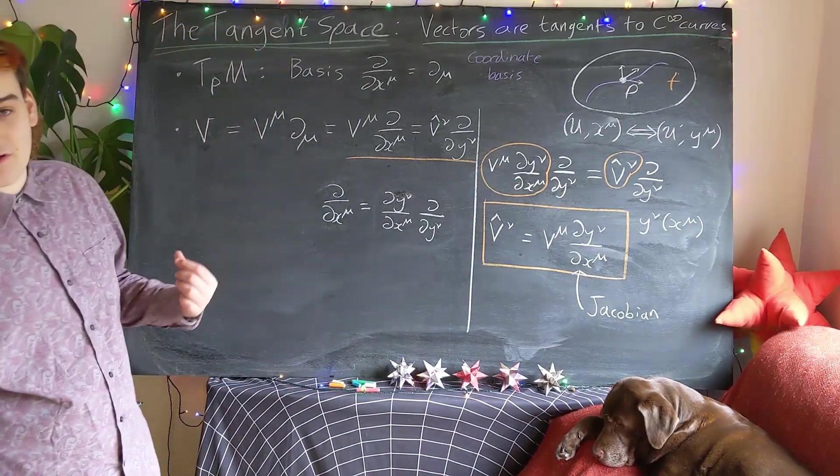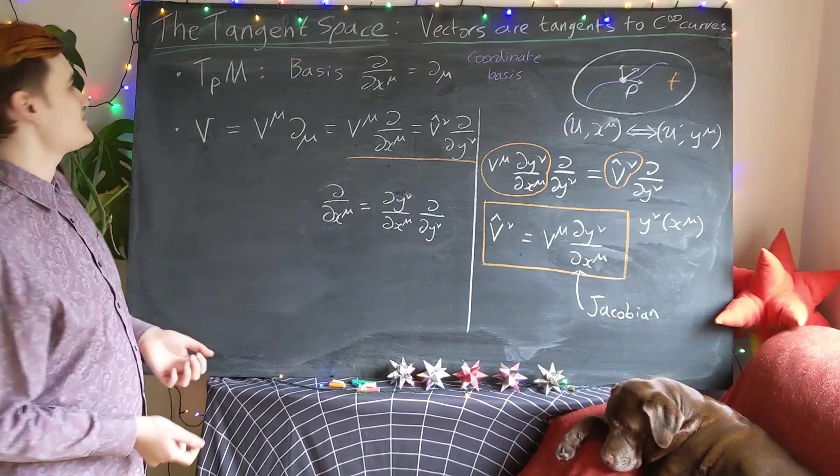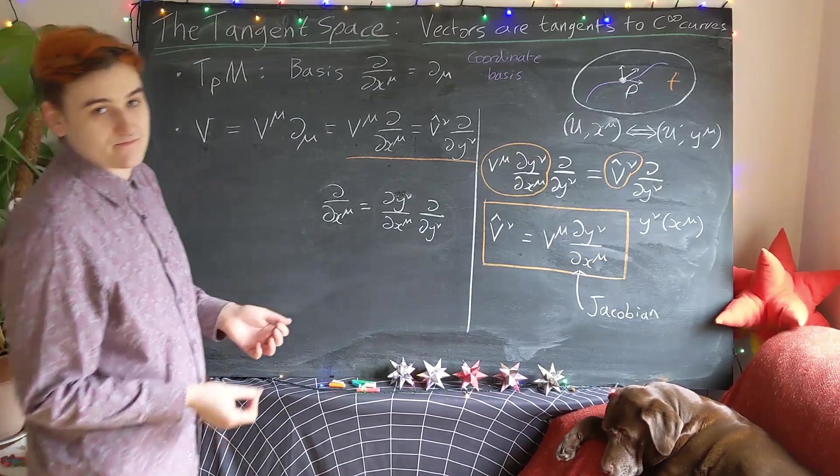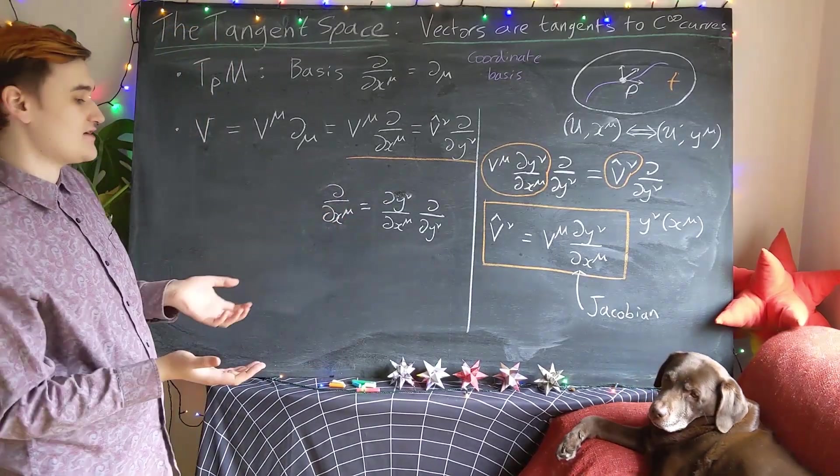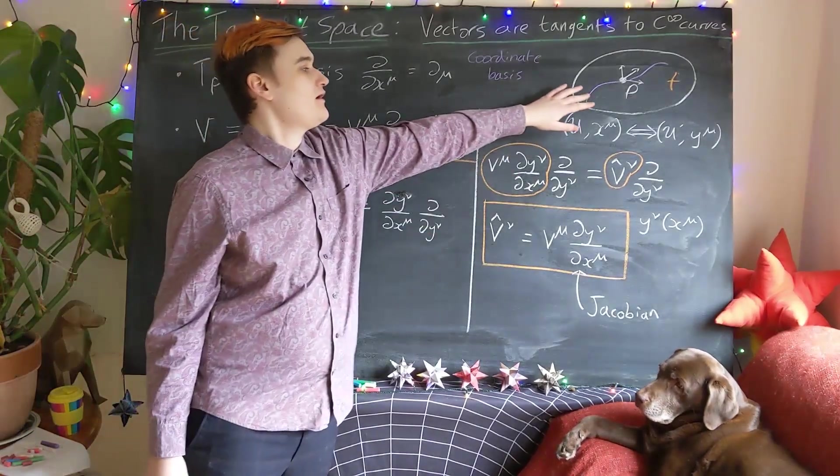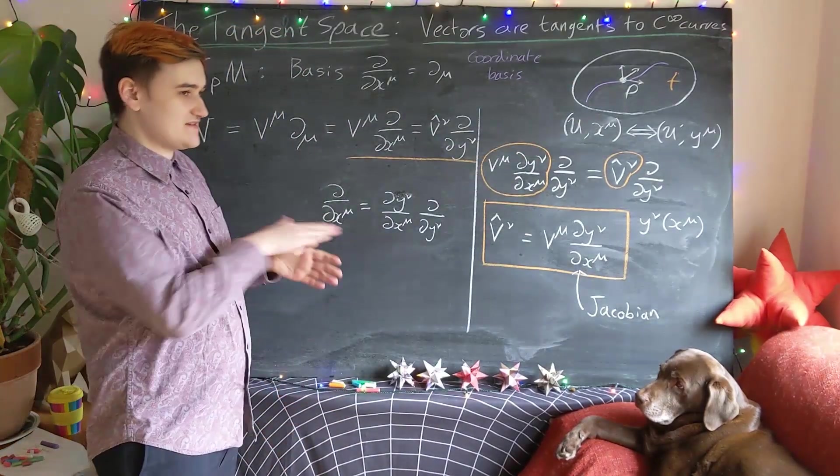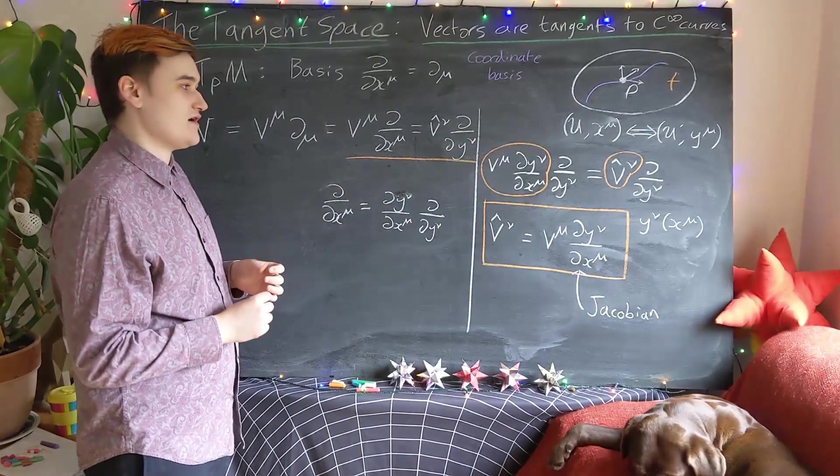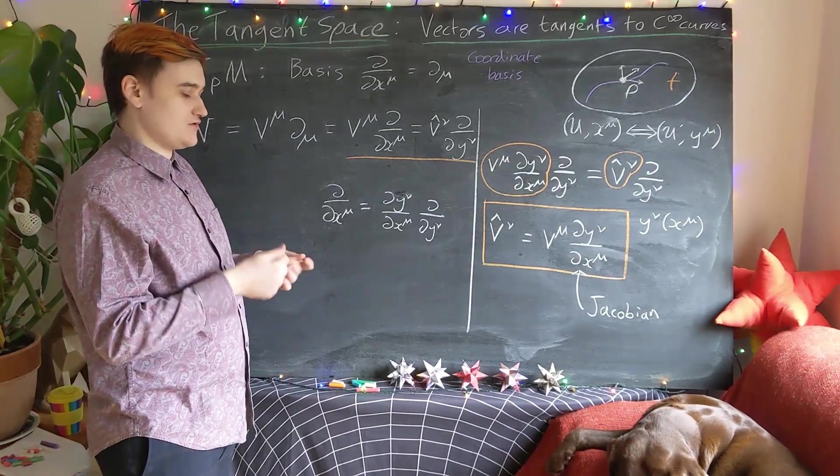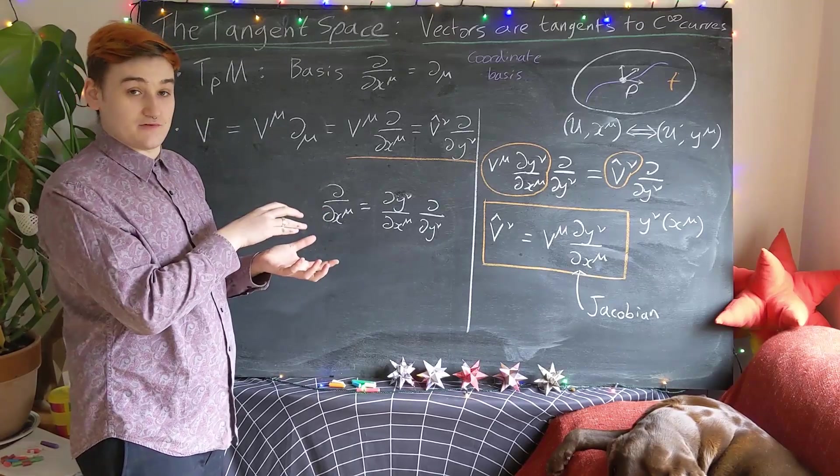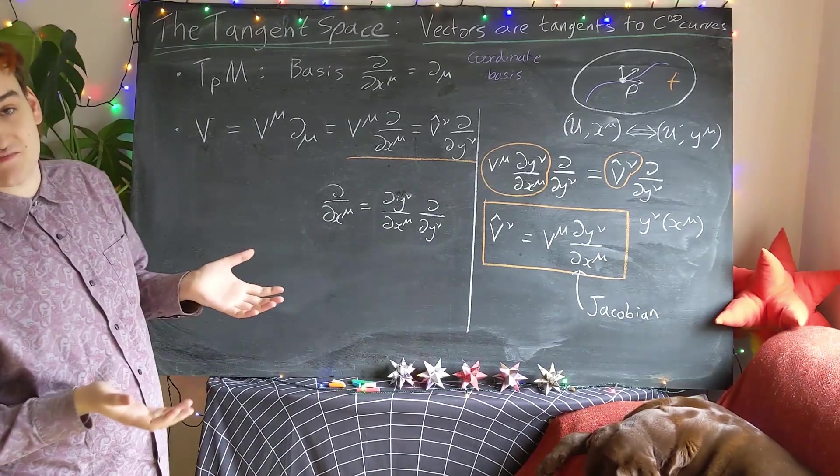OK, so I'll summarize what we've covered then. So I introduced sort of briefly and schematically how to construct the tangent space. We construct the set of all possible smooth curves that pass through a point. And then we consider taking the velocity or tangent derivative vector to all of those curves. And then the set of all those tangents or the set of all of the vectors acting on all of the functions to produce those tangents gives us the tangent space.